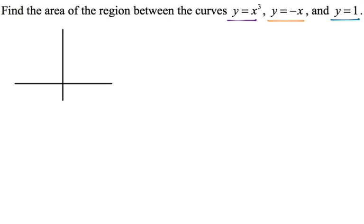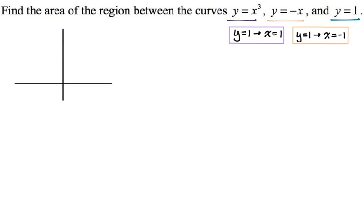I'm going to start with a set of axes and figure out intersection points. A key bound here is y equals one. If y equals one, then x cubed equals one, so x equals one — that's the intersection of y equals one and y equals x cubed. For y equals one and y equals negative x, x would have to be negative one. And x cubed and negative x intersect at the origin.